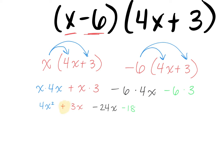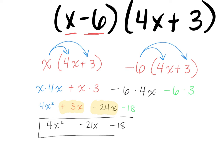The like terms are 3x and negative 24x. Very good. Nicole, what do we get when we combine those two? Negative 21x. Excellent. Remember we need to keep the 4x squared and the minus 18. Roy, how do I know that I'm done? Why can't we combine the 4x squared and the minus 21x? The 21x has an exponent of 1 and the x squared has an exponent of 2 in the first term.